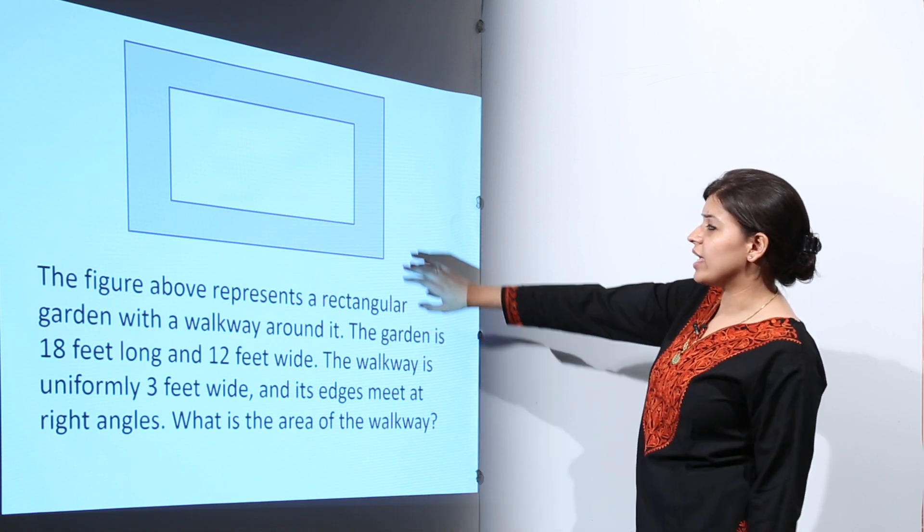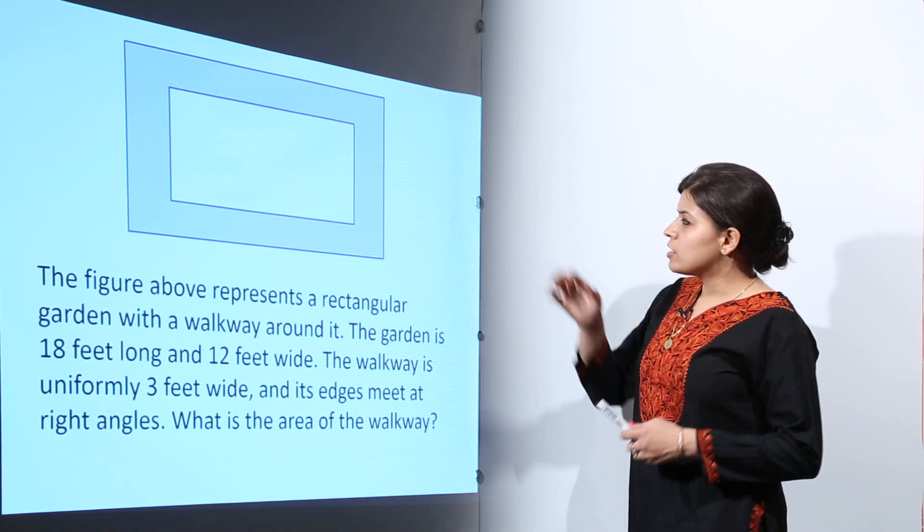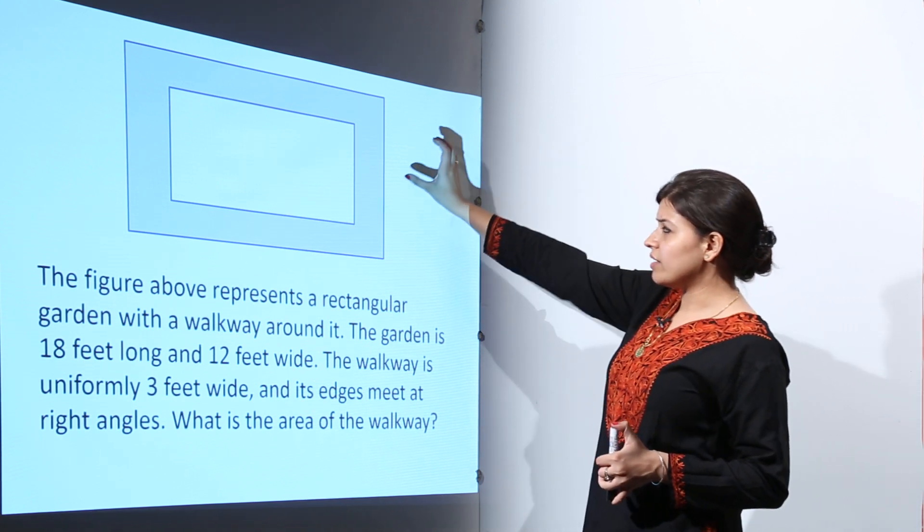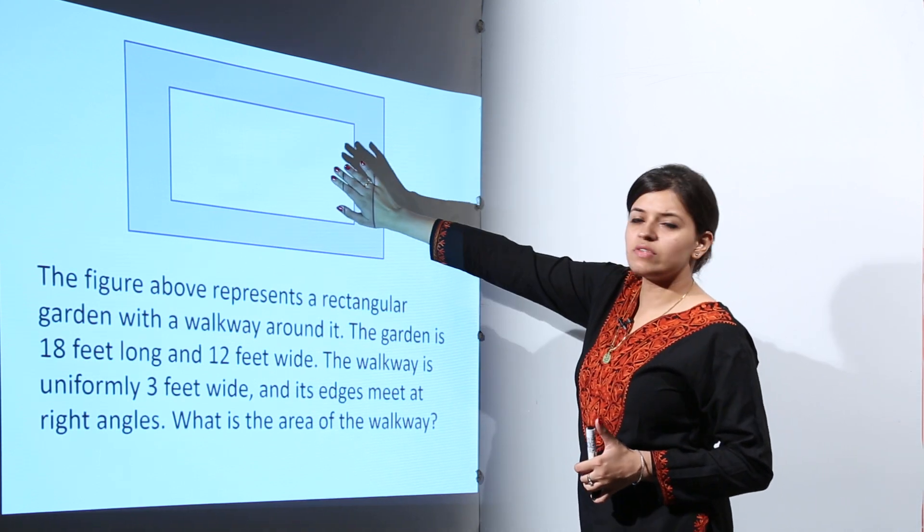That means we have to find the area of the shaded portion. To find the area of the shaded portion, we will subtract the area of the inner portion from the entire area.